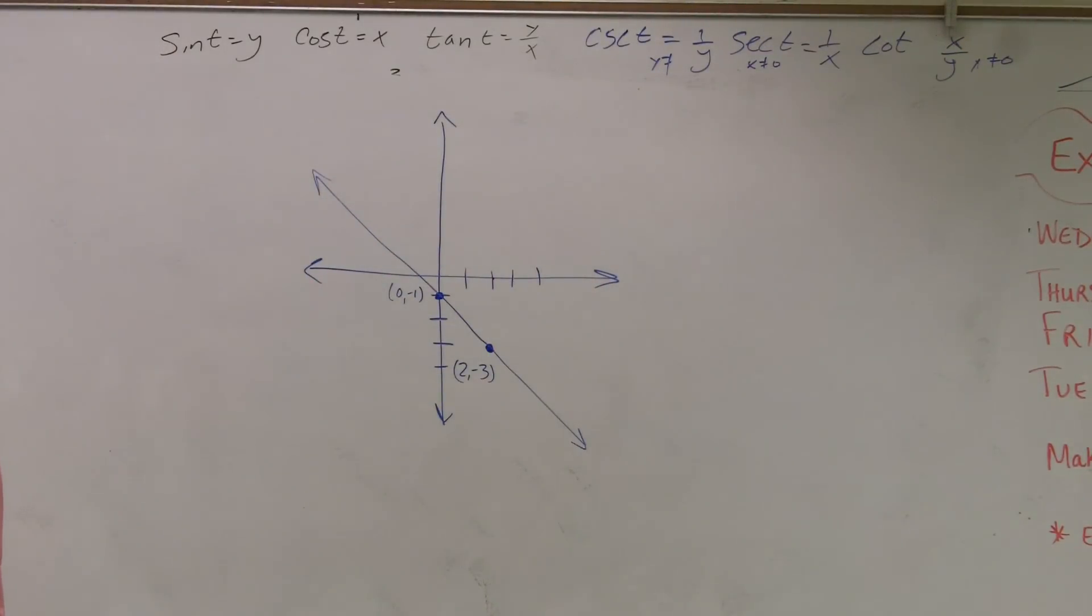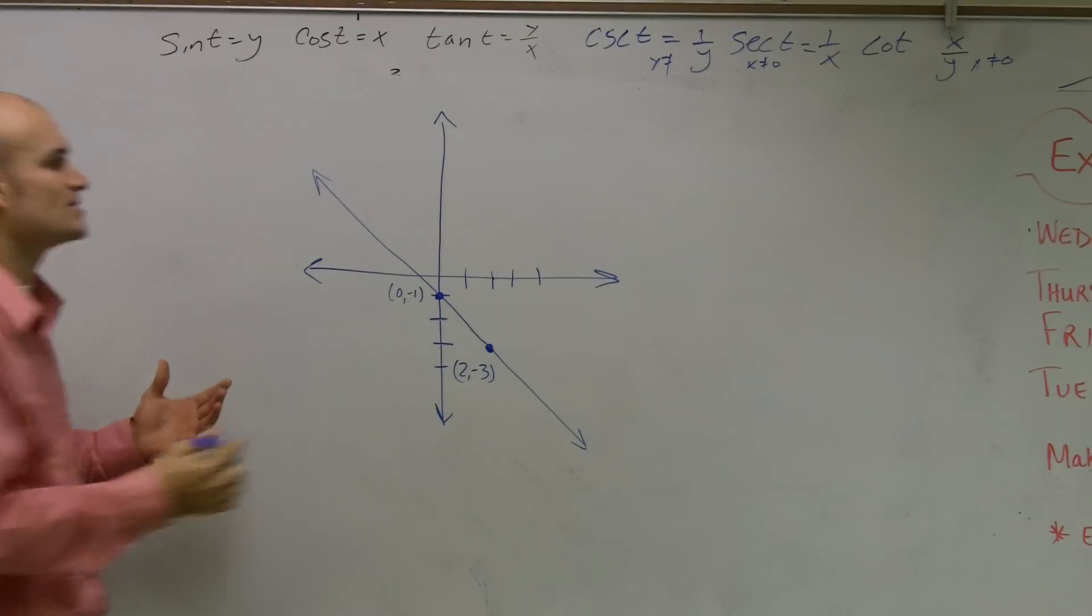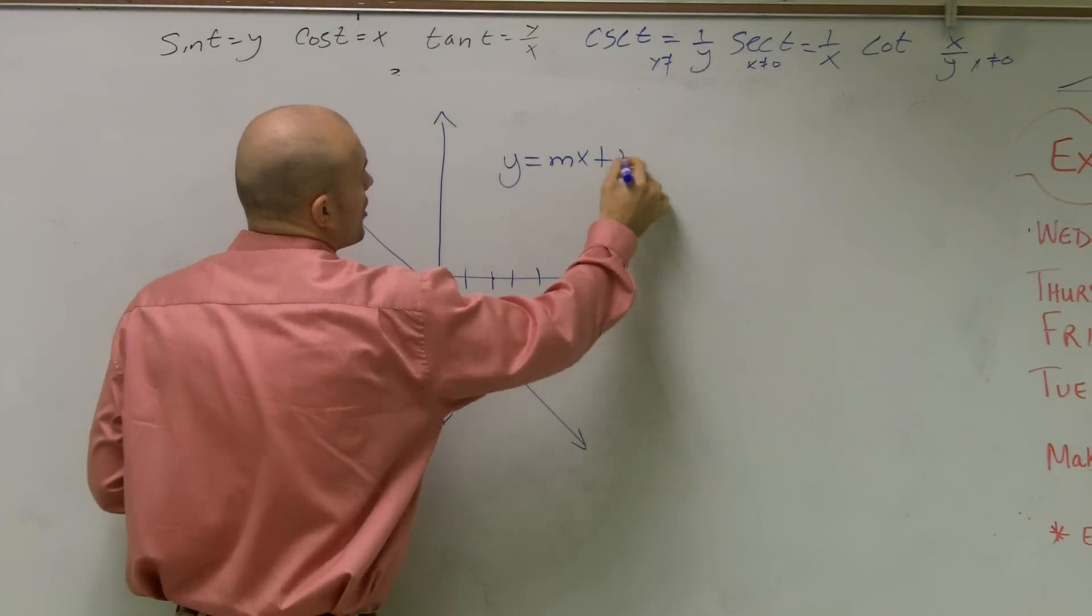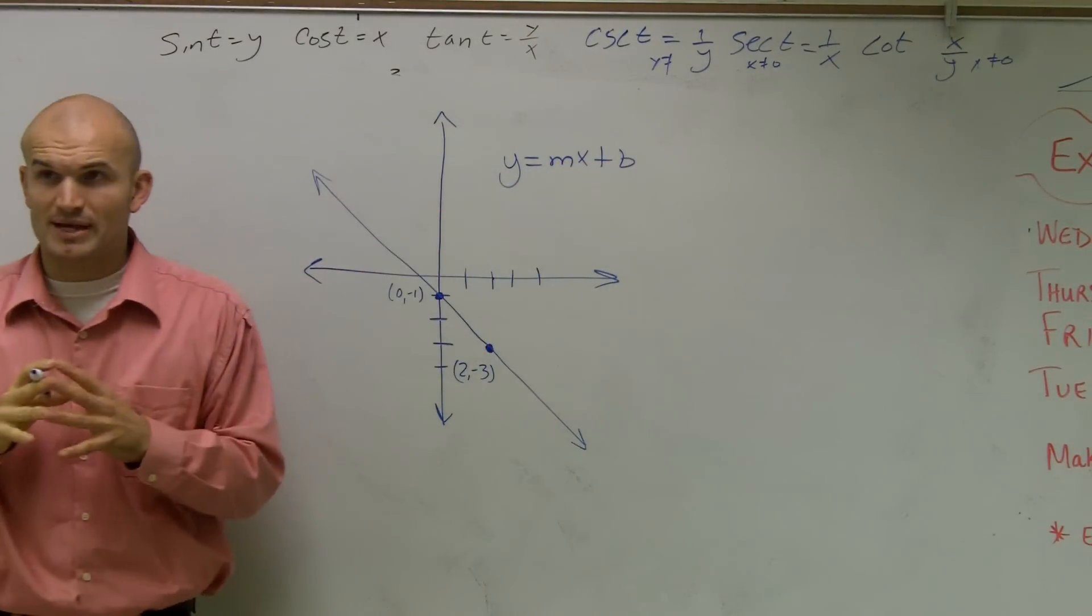For this one, what we want to do is find the equation of the line in slope-intercept form, meaning we want to look at y equals mx plus b.